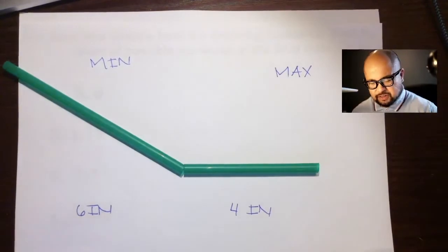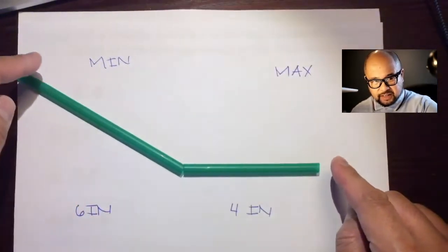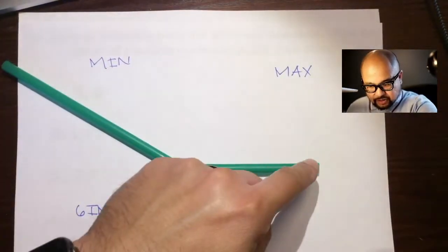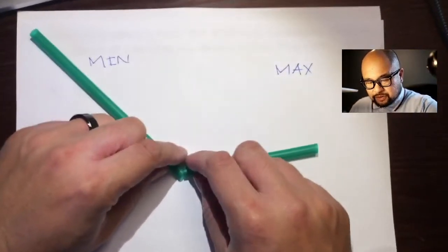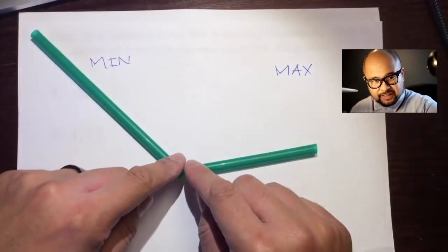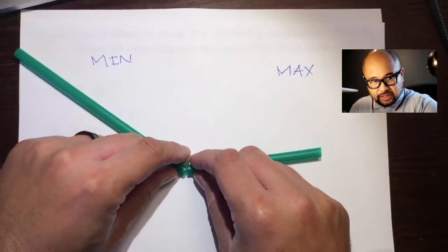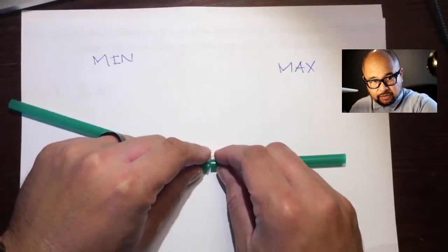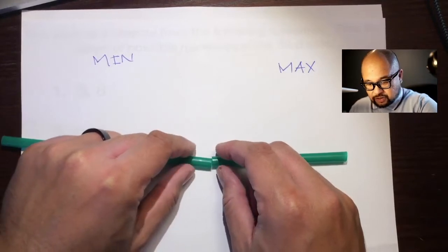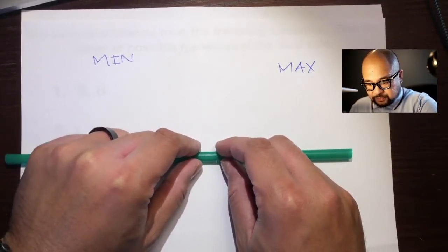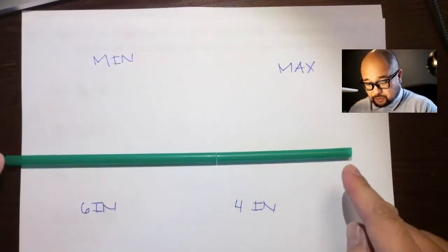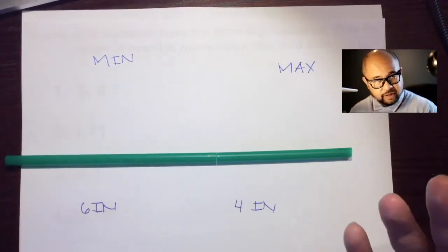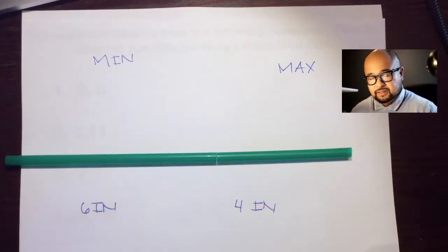Our goal is to figure out: what's the longest this third side could be, and what's the shortest this third side could be? To find the maximum, what do we have to do to make this side longer? Let's make this angle right here wider — let's rotate so that this angle is as wide as possible. The widest it could be without becoming a reflex angle would be a straight angle, or 180 degrees. So what's the length from here to here? It's 10. Four plus six is 10.